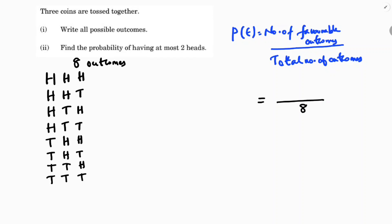Now the favorable outcomes — the question asks for the probability of at most two heads. We need to understand what 'at most two heads' means.